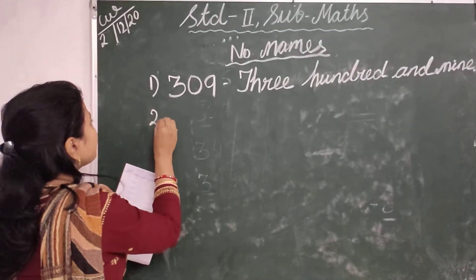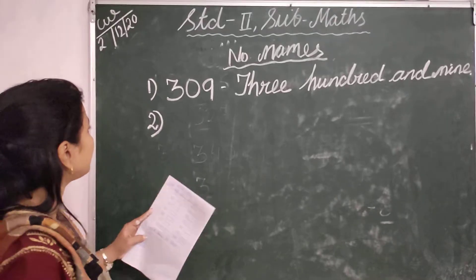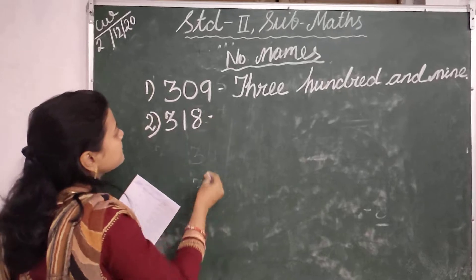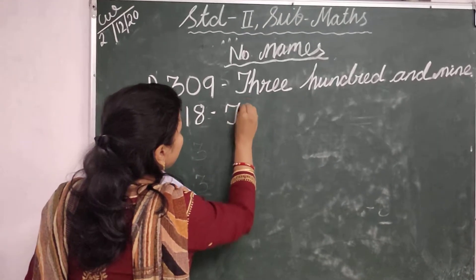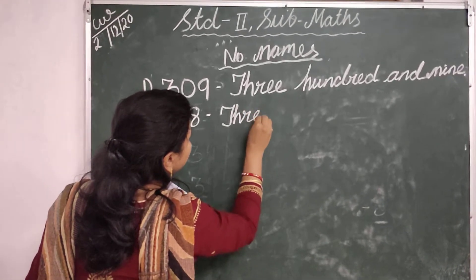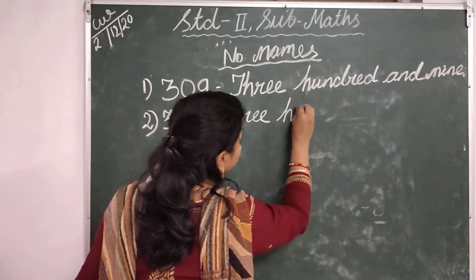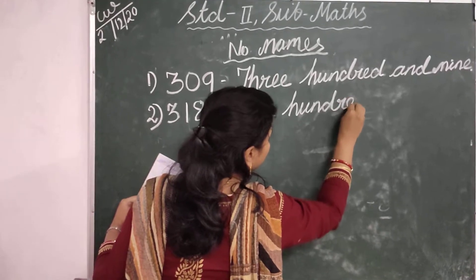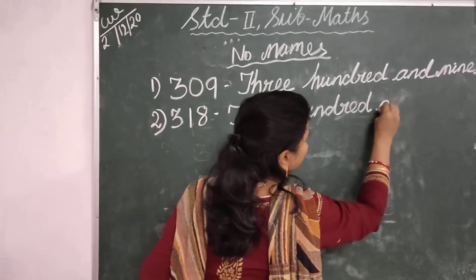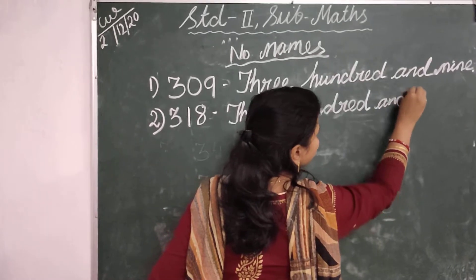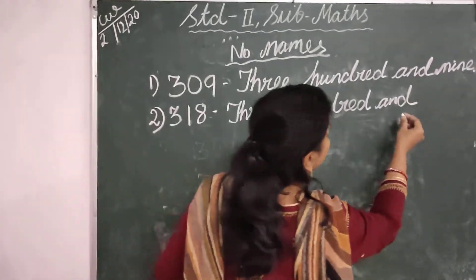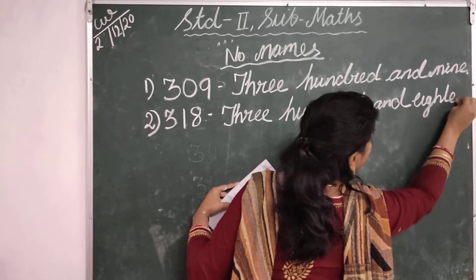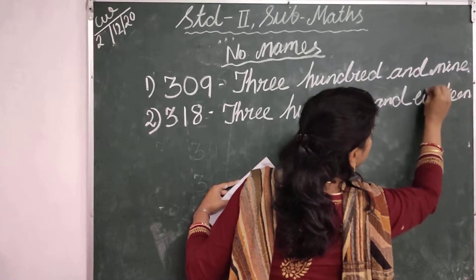Then your next number is 318. 318. Three hundred and eighteen. T-H-R-E-E H-U-N-D-R-E-D and E-I-G-H-T-E-E-N.